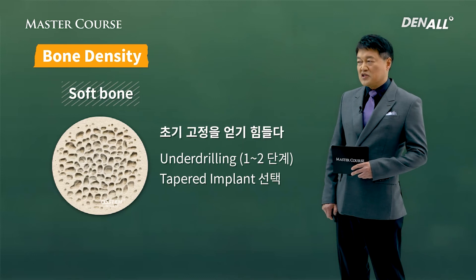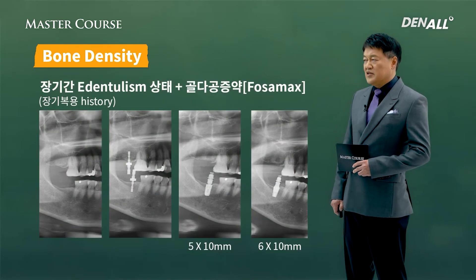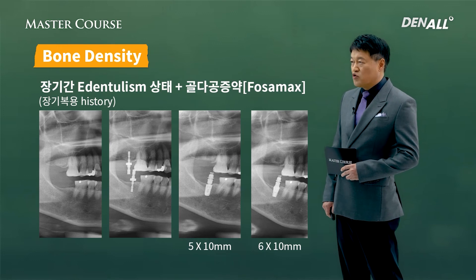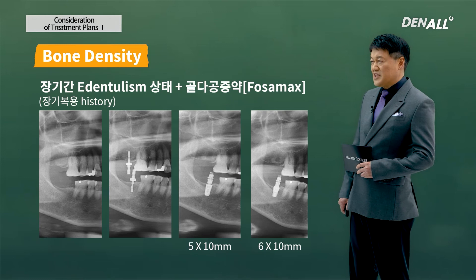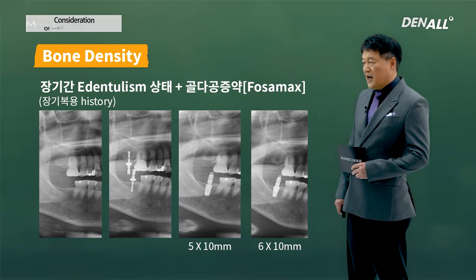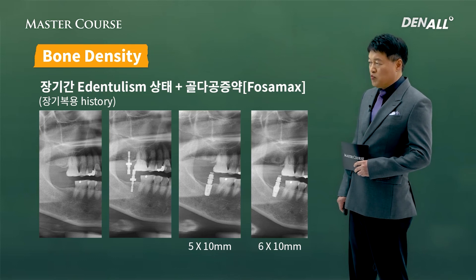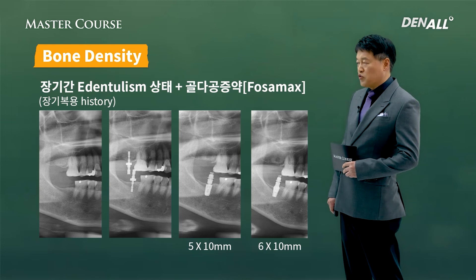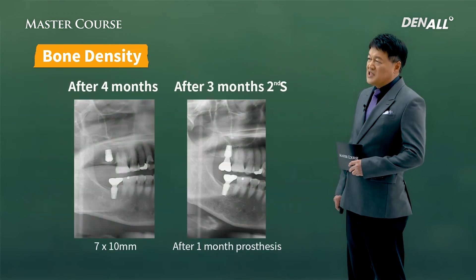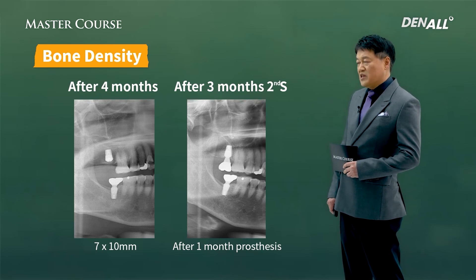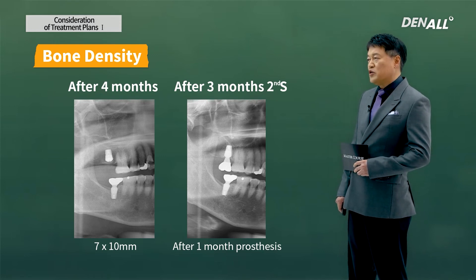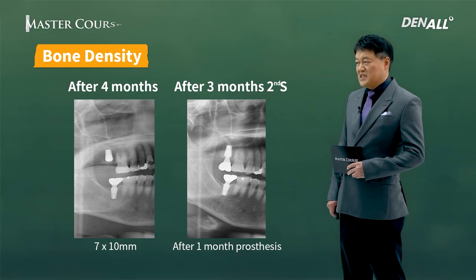A tapered implant should be chosen for initial stability as well. Soft bone is often observed in the upper posterior area where significant time has elapsed after extraction. One patient had taken Fosamax and osteoporosis medication for a long time. I failed in getting stability using a 5 mm implant, so I changed to a 6 mm implant. I was not able to gain initial stability in the maxilla, so after four months I placed a diameter 7 implant. I did two-stage surgery, with second surgery three months later and prosthetics delivered one month after.